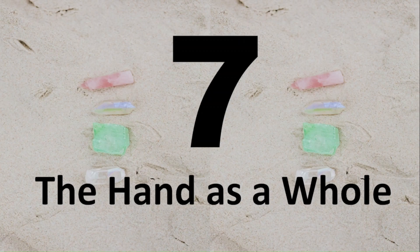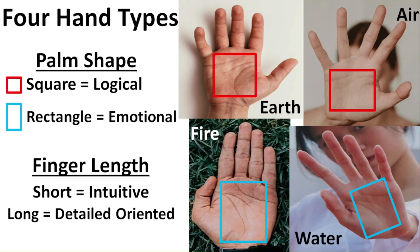Number seven, the hand as a whole. There are four hand types. Click the link on the top right for the video to determine your hand type, and to learn about the characteristics of each type.